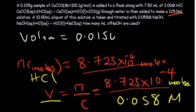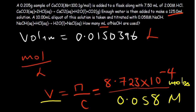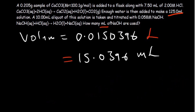Converting from liters to milliliters by multiplying by 1000 gives 15.0396 milliliters. This is not the final presented answer — we need to apply significant figures. Checking the given data: we have three significant figures in most values, but the concentration of sodium hydroxide (0.058) has only two significant figures. Therefore our final answer is 15 milliliters of sodium hydroxide.